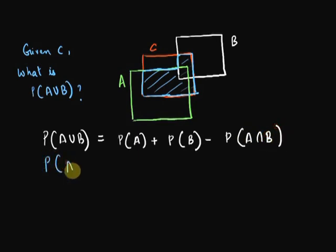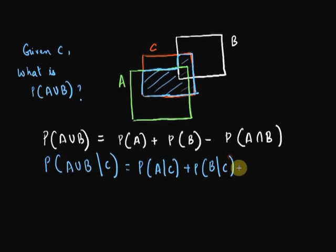So the conditional probability of the union will just be the conditional probability of A plus the conditional probability of B minus the conditional probability of their intersection. Same formula with the condition attached to each term.